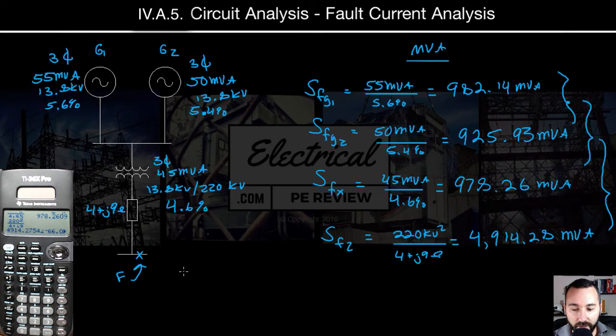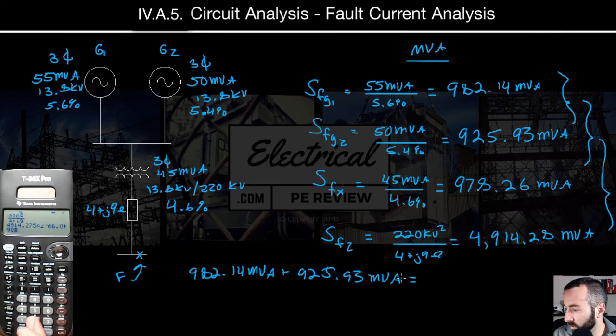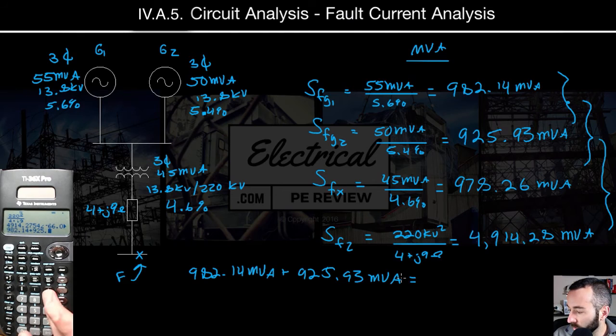So it's going to look like this. To find SF total, we're going to have 982.14 MVA plus 925.93 MVA. Okay, that's going to give us, let's see, 982.14 plus 925.93.